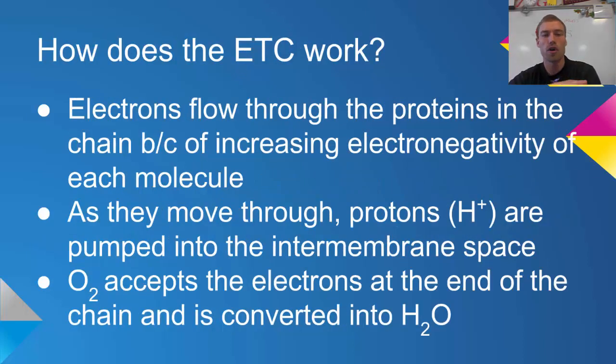How does it work? Electrons flow through the proteins in the chain because of increasing electronegativity of each molecule. Where they're dropped off has the lowest electronegativity, and every subsequent molecule has higher electronegativity as you move down the chain.